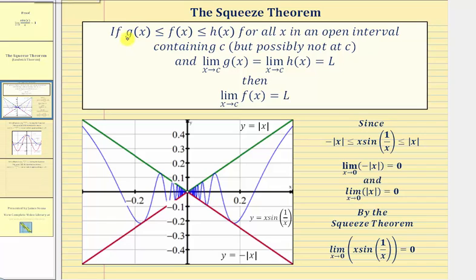The squeeze theorem states that if f of x is greater than or equal to g of x and less than or equal to h of x for all x in an open interval containing c, but possibly not at c, and the limit as x approaches c of g of x equals the limit as x approaches c of h of x, which both equal L,